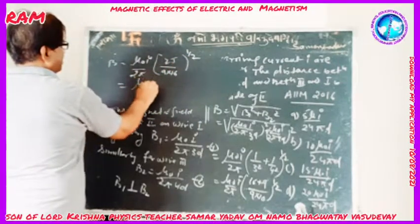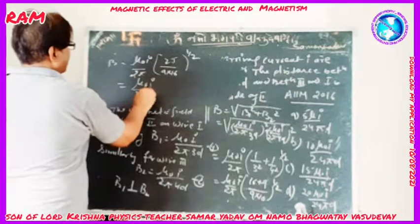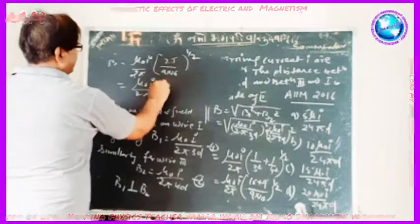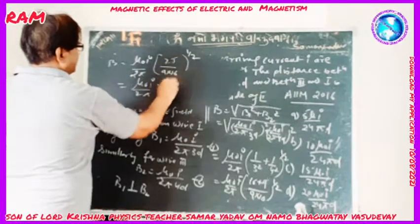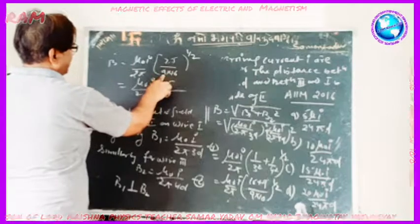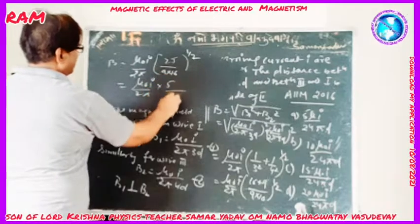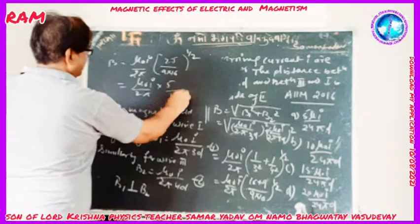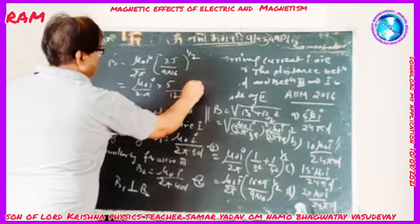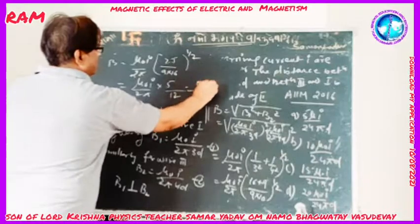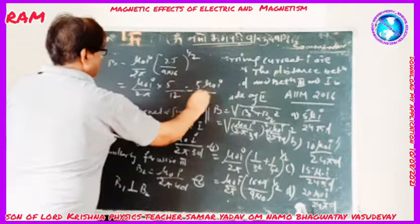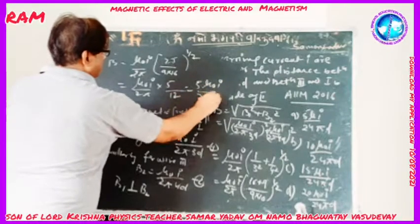Simplifying: √25 = 5 and √144 = 12, so B = (μ₀I / 2π) × (5/12). This gives the final answer: B = 5μ₀I / (24πD).